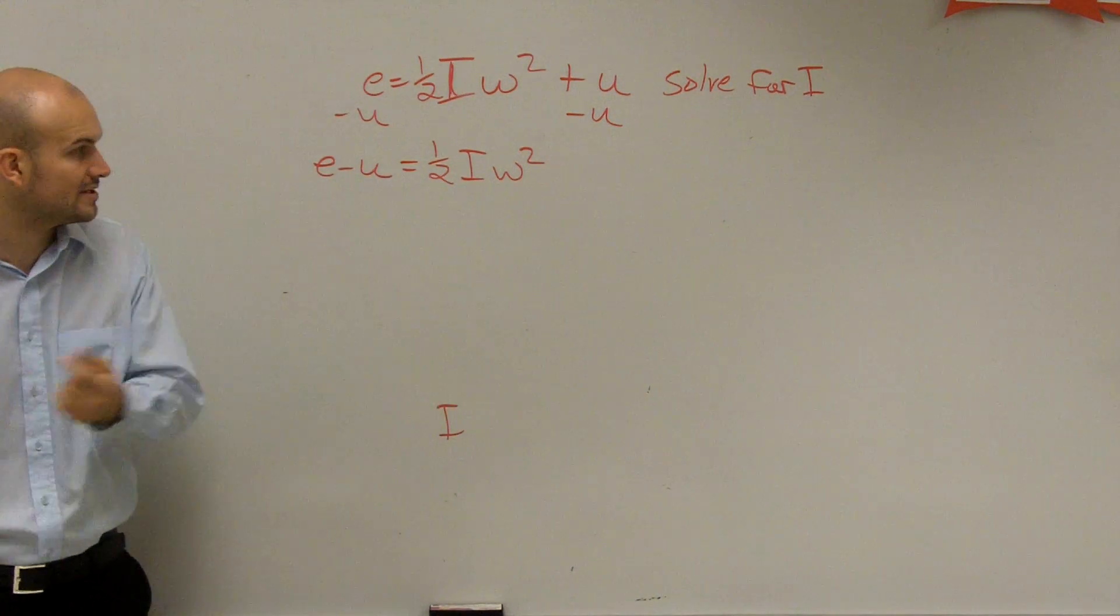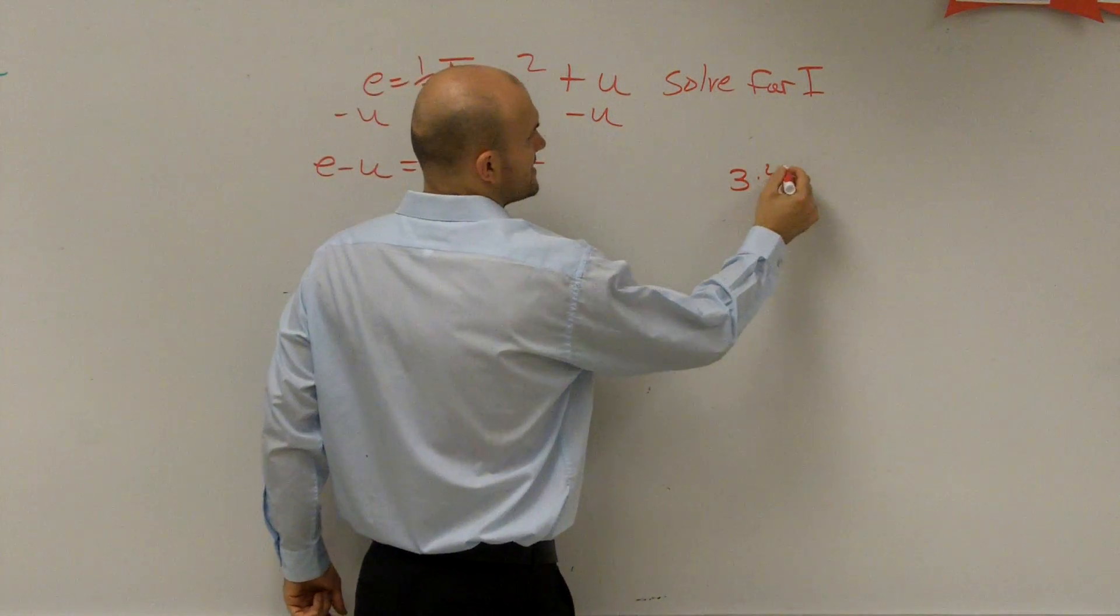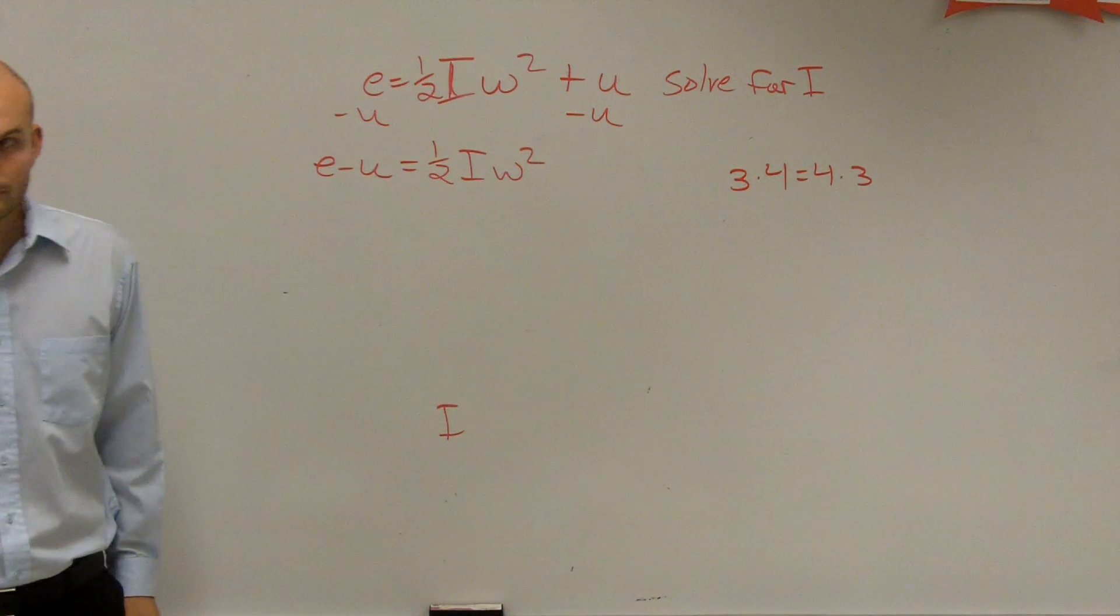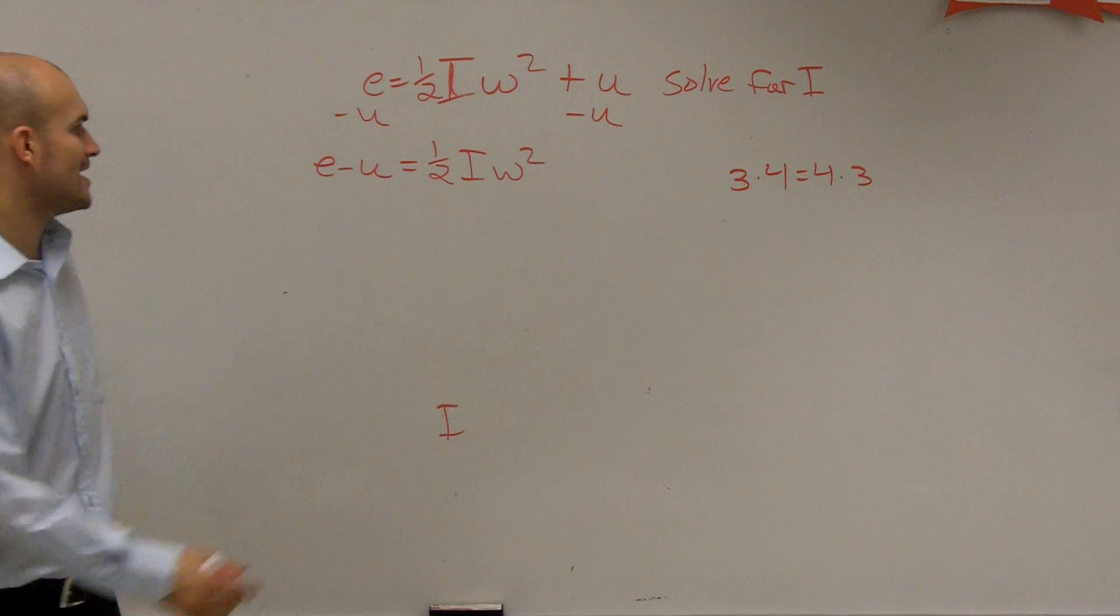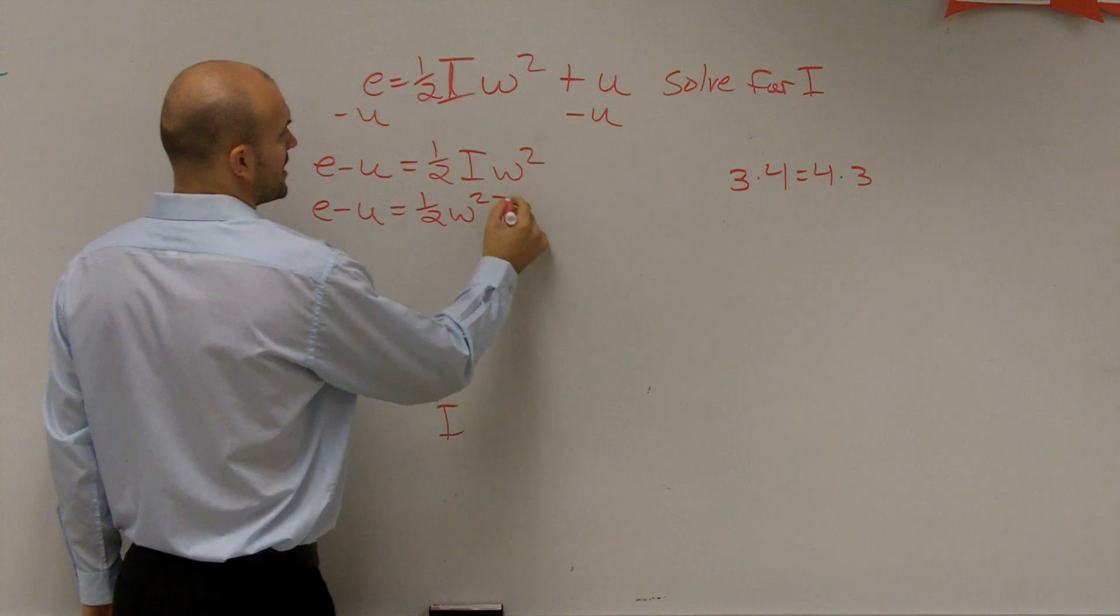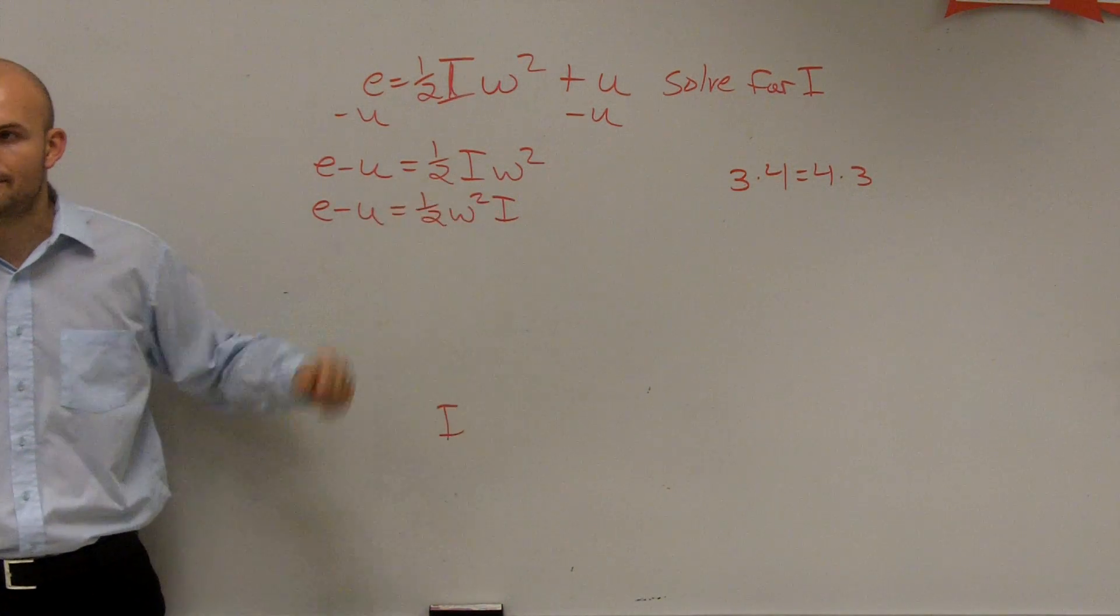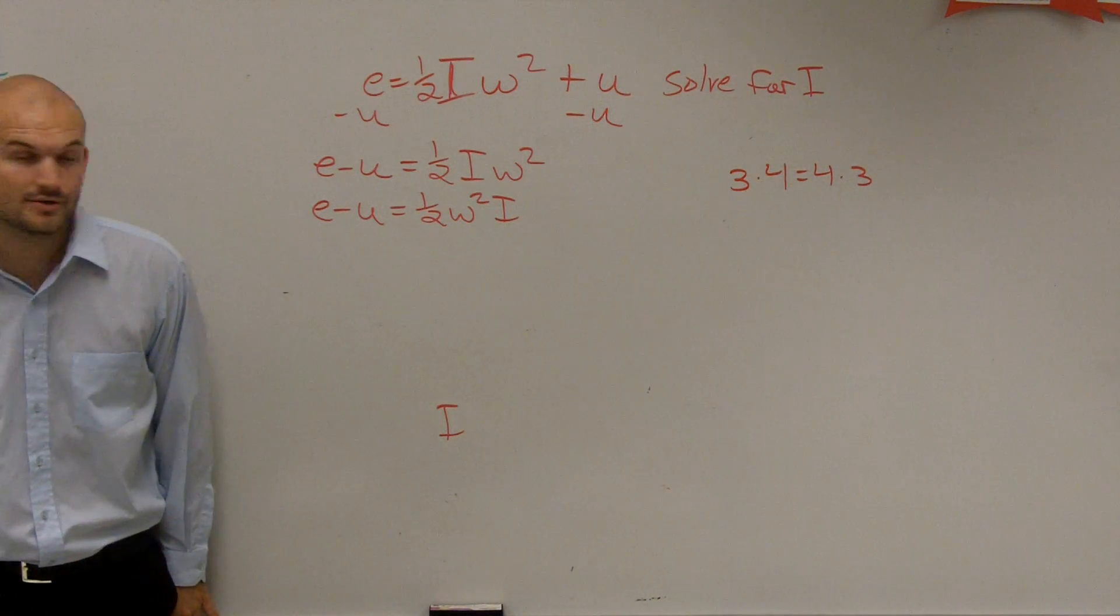And this one can get kind of confusing, because it doesn't matter. Remember, ladies and gentlemen, three times four is equal to four times three. So i is in the middle, but that's okay. You can rearrange that to e minus u equals one half w squared times i. You can rewrite it like that, because the commutative property of multiplication allows us to do that.